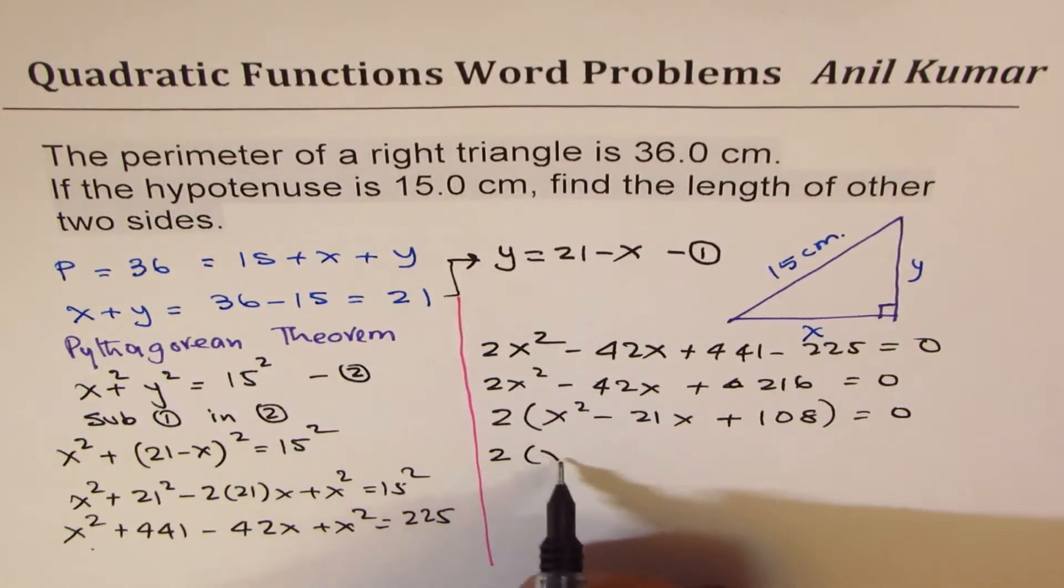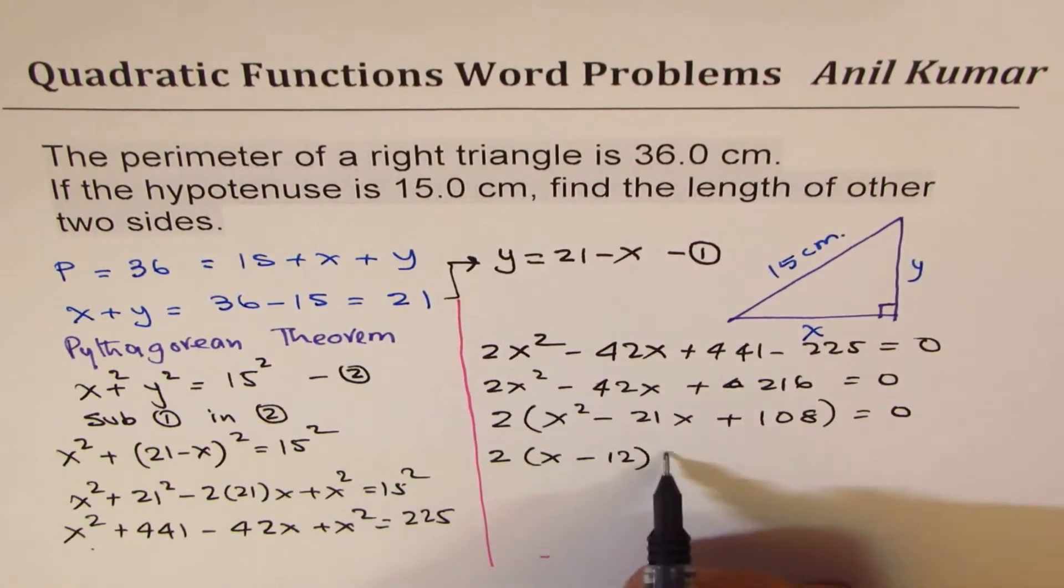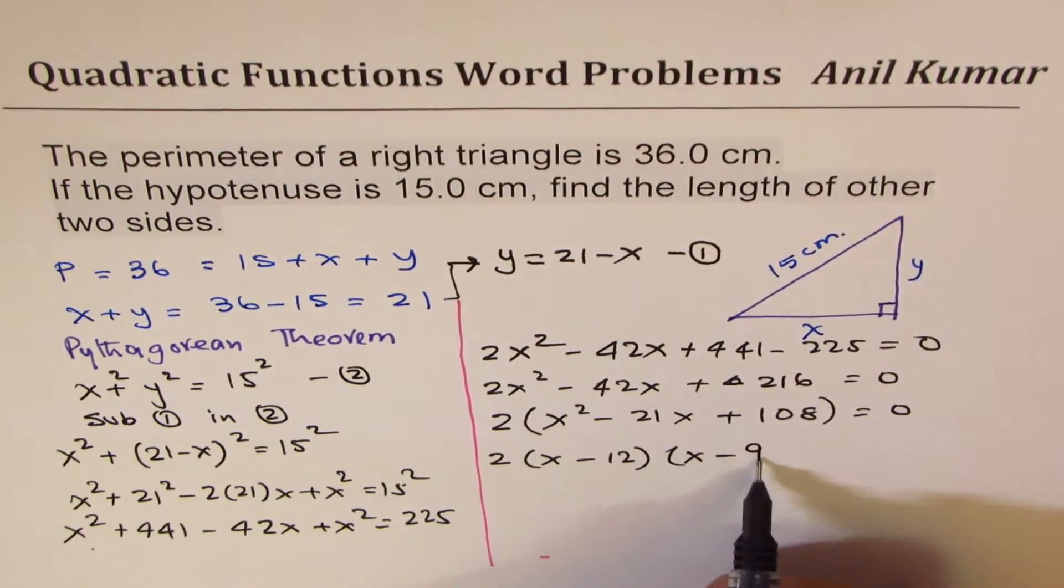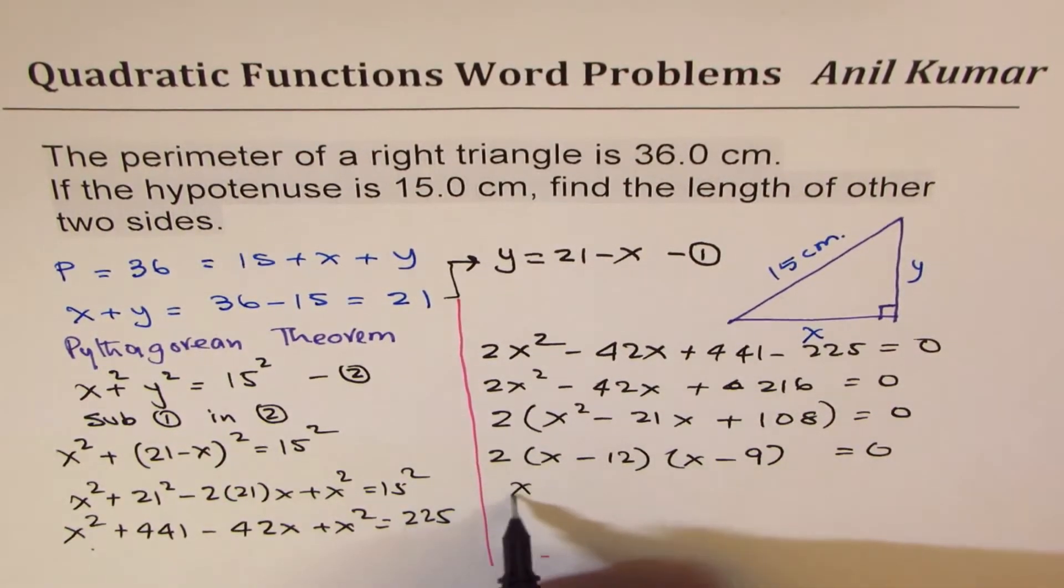So you could write this as (X minus 12) times (X minus 9) equals to 0. That gives you two solutions: X equals to 12 or X equals to 9.